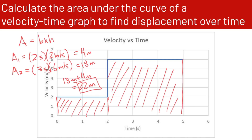So 18 meters plus 4 meters gives us a total of 22 meters — the same answer we got the first way. You can see the two methods are pretty similar; it's just thinking about it in two different ways, but you get the same answer either way.